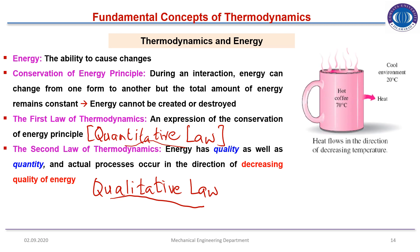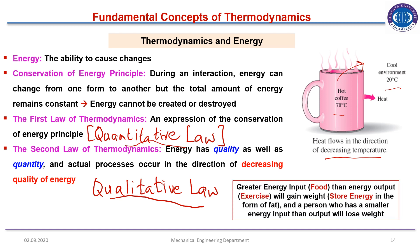For example, a hot cup of coffee at 70°C in an environment of 20°C will transfer heat to the environment through the wall of the cup — heat flows in the direction of decreasing temperature. Similarly, greater energy input than output leads to weight gain stored as fat, while smaller energy input than output leads to weight loss.